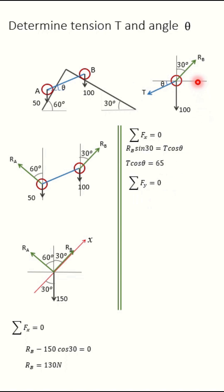Sigma Fy is equal to 0, RB cos 30 minus 100 minus T sin theta is equal to 0. So simplify this, T sin theta is equal to RB cos 30 minus 100. Value of RB is known, 130 N. So solve this, you will get 12.5.